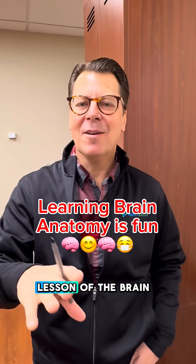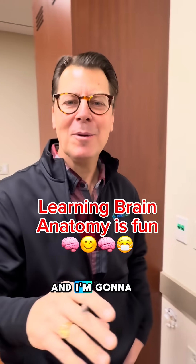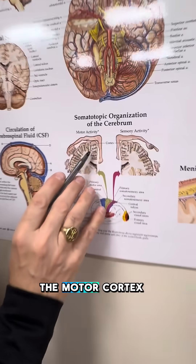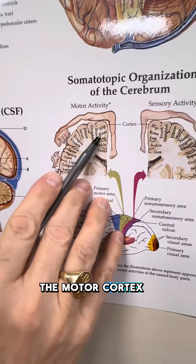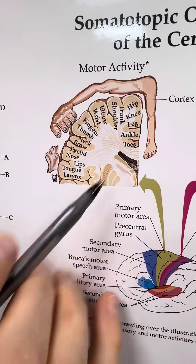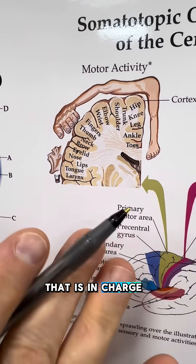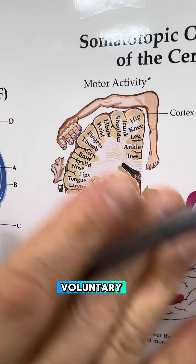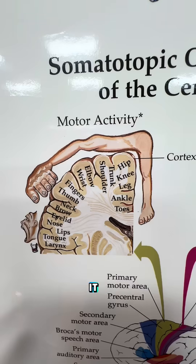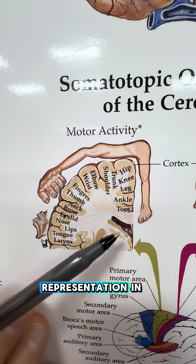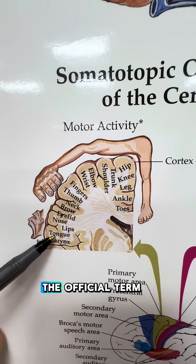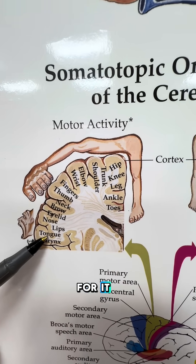We're going to do a quick anatomy lesson of the brain. I'm going to show you the motor cortex of the brain. There's a part of our brain that is in charge of our voluntary movements, and there's actually a map to it. This anatomic representation in our brain is called the homunculus — that's the official term for it.